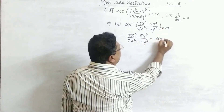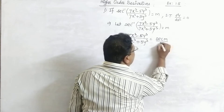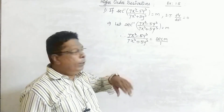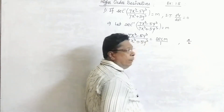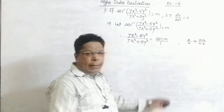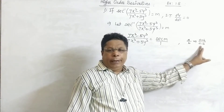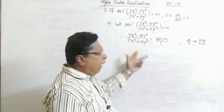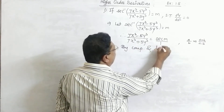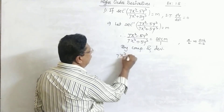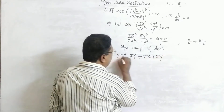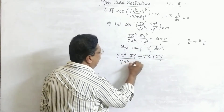The sec inverse of (7x³ minus 5y³)/(7x³ plus 5y³) equals n. Taking sec of both sides, we need to apply componendo and dividendo. Componendo and dividendo: if the ratio is a/b, it becomes (a + b)/(a − b). Apply this here: the numerator becomes 7x³ minus 5y³ plus 7x³ plus 5y³, and the denominator is 7x³ minus 5y³ minus (7x³ plus 5y³).